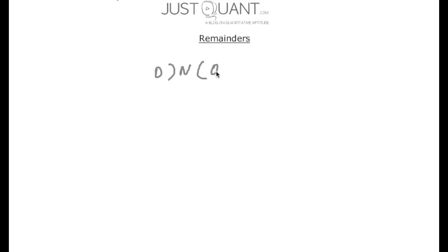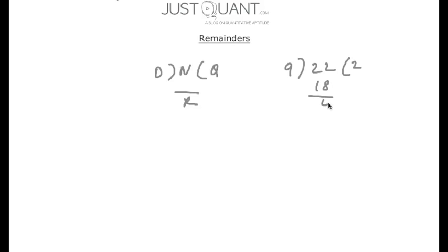To start with, we know that when we have a number n which is divided by a divisor d, it gives us a quotient q and a remainder r. For example, if I have the number 22, this when divided by 9 gives us a quotient of 2 and a remainder of 4. So 22 is equal to 9 times 2 plus 4.